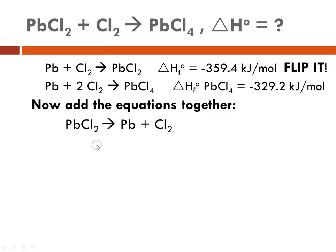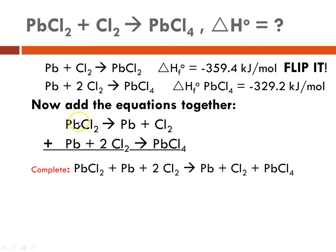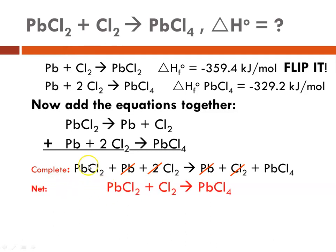Now we're going to add those two equations together. The first equation for lead(II) chloride has been flipped, so now it reads: PbCl₂ → Pb + Cl₂. The second equation is written as is. When we add them, we have lead(II) chloride plus lead plus chlorine yielding lead, chlorine, and lead(IV) chloride. We then cancel things that appear the same on both sides — lead cancels, and with two chlorines on one side and one on the other, one cancels, leaving one chlorine. The net equation is: PbCl₂ + Cl₂ → PbCl₄, which matches the original.